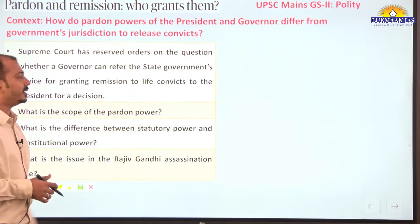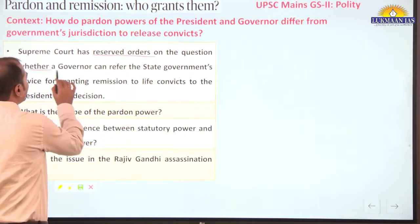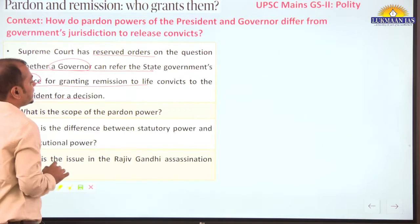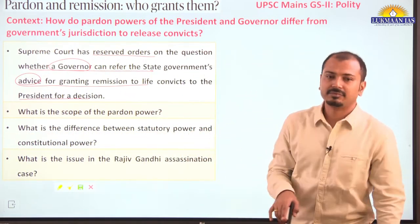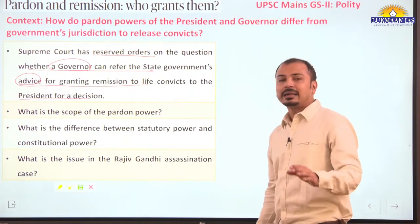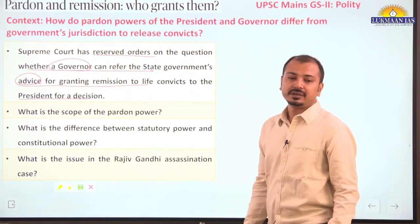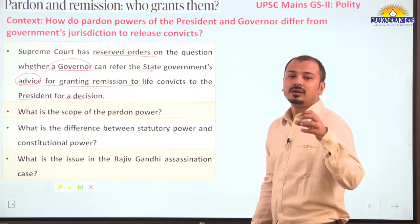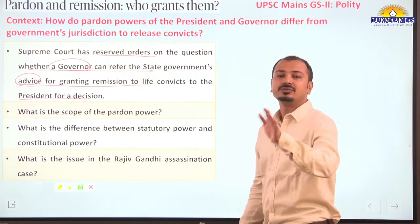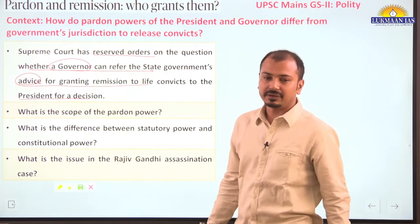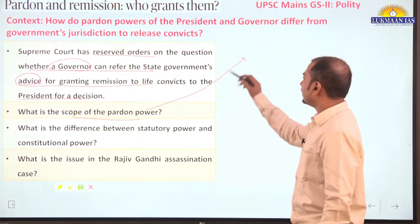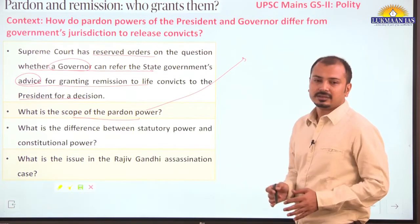The Supreme Court has reserved its orders on the question of whether the Governor can refer the state government's advice for granting remission to life convicts to the President for decision. The Tamil Nadu government had invoked Article 161 of the Indian Constitution, which provides pardoning powers to the Governor. These pardoning powers are not discretionary — they are exercised on the aid and advice of the Council of Ministers headed by the Chief Minister.